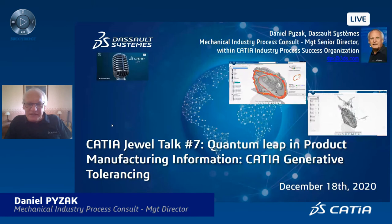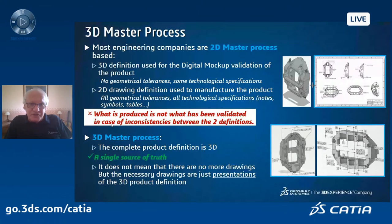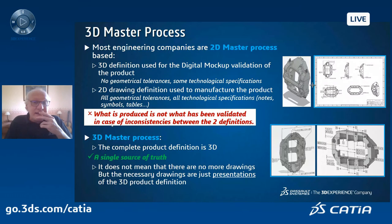Let's start. Here we are talking about 3D master. 3D master is mainly the vocabulary used by the ISO system to explain that if you are just using 3D modeling to design the part but then still relying on drawings to produce the information for the manufacturing, inspection, maintenance, and after sales — you are dead, guys. Because there are a lot of inconsistencies between the drawing itself and the 3D model.